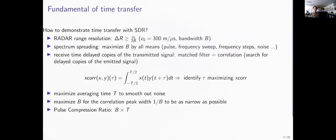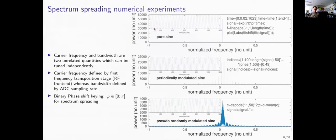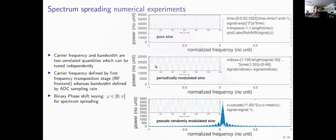Let us start with spectrum spreading. Consider a pure sine wave: it has no timing capability because all sine periods look similar. Its spectrum is a Dirac function at the carrier frequency. If we flip the phase every other period—BPSK modulation—we gain some timing capability, and the spectrum broadens with additional discrete peaks around the carrier frequency. However, timing capability is still not excellent.